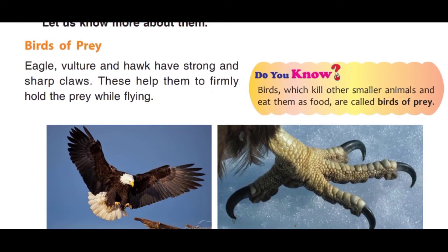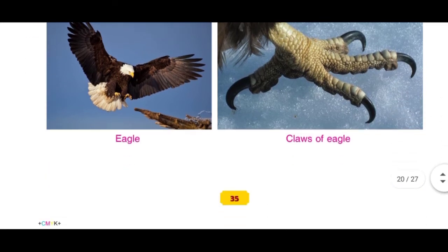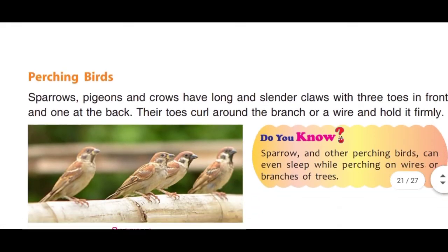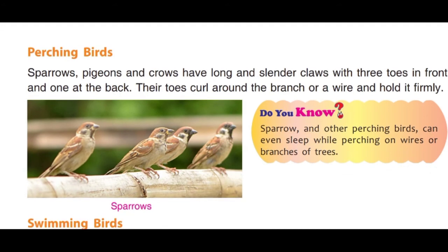Now we will study about birds of prey. Birds which kill other animals and eat them as food are called birds of prey — aise birds jo dusre chote janwaron ko maar kar khaate hain. Eagle, vulture, and hawk have strong and sharp claws. These help them to firmly hold the prey while flying. Unke claws unhe apne prey ko mazbooti se pakde rakhne mein help karte hain.